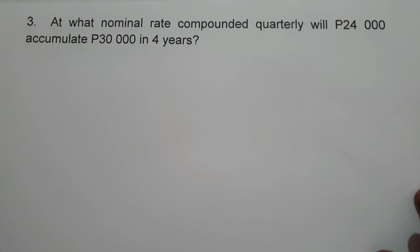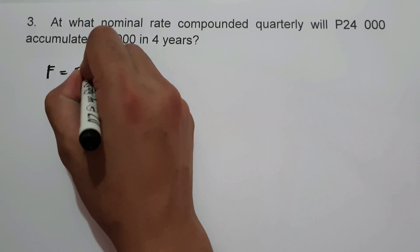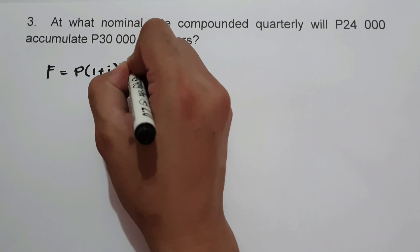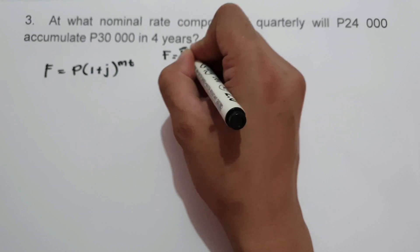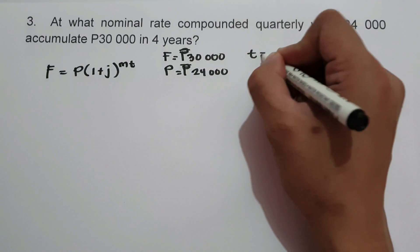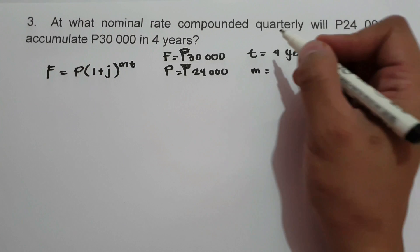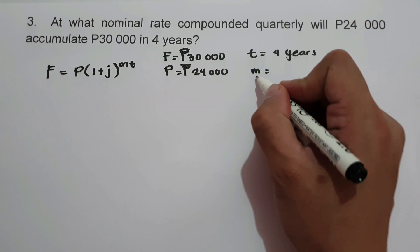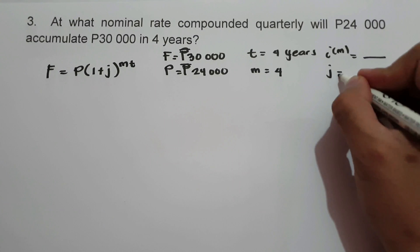On our last example, at what nominal rate compounded quarterly will P24,000 accumulate to P30,000 in 4 years? To find the nominal rate, we use the formula F equals P times the quantity of 1 plus J raised to M times T. F is 30,000, P is 24,000, T is 4 years, M is 4 since it is compounded quarterly. We are looking for the nominal rate and the value of J, the interest rate per conversion period.